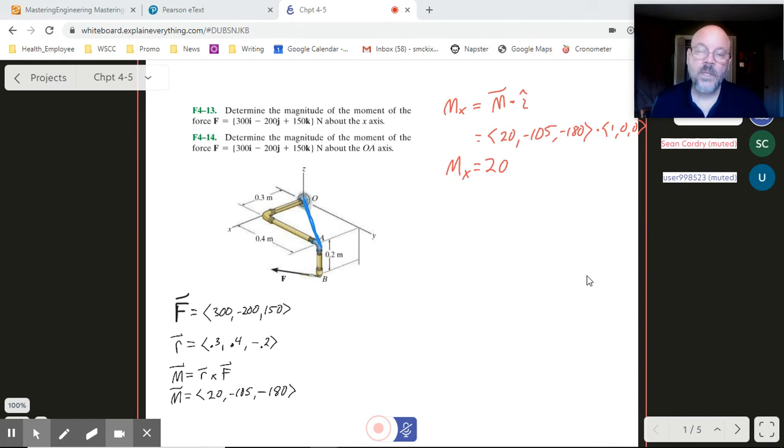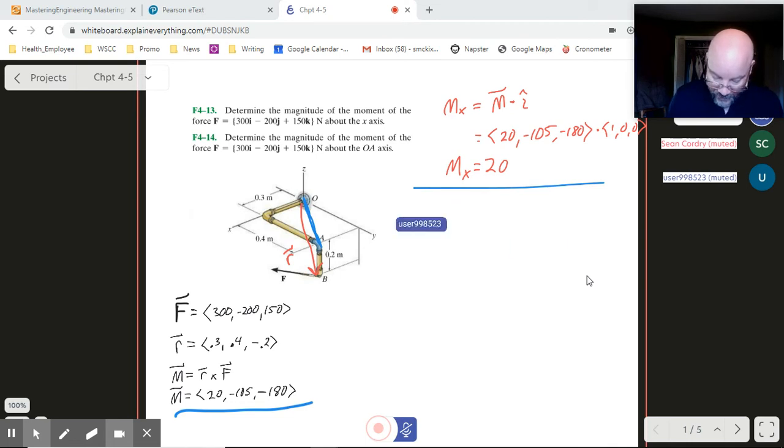So we could start it at A. We could start it at O. Whatever we want to do. Now we already have it starting at O. So I could put back the same vector that we had right there. And if we do that, what we end up getting is the same answer here for our moment. It's just that what we want to do then is we need to dot it with a unity vector in the OA direction. So what we're going to be looking at then is we'll say something like this. We'll say MOA. And that's going to be M dotted with U OA.